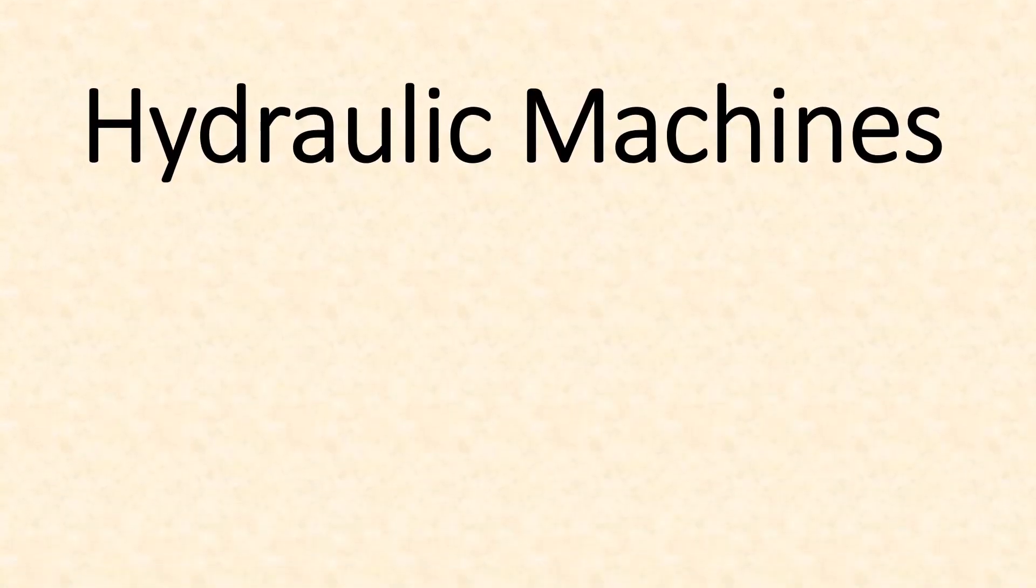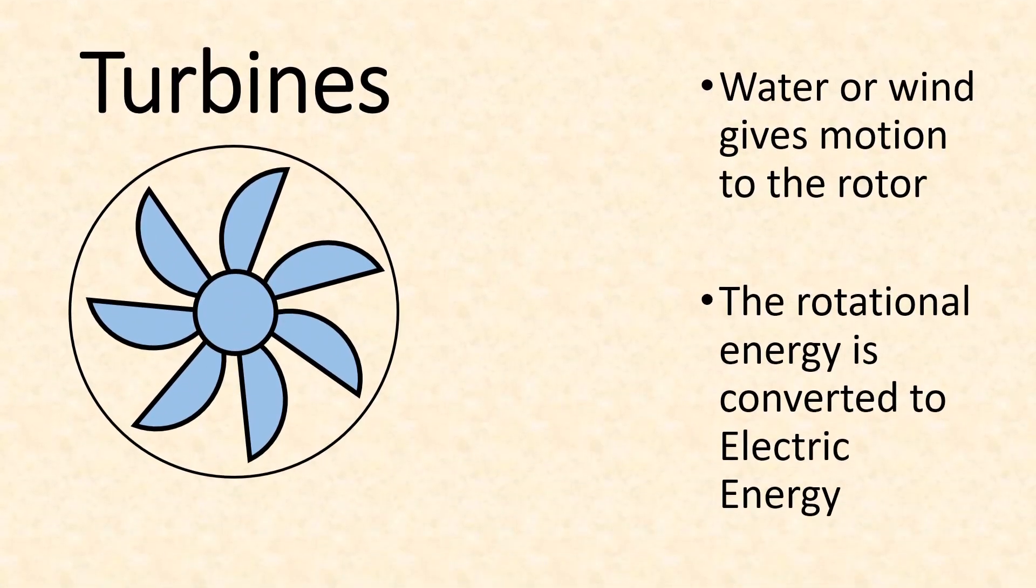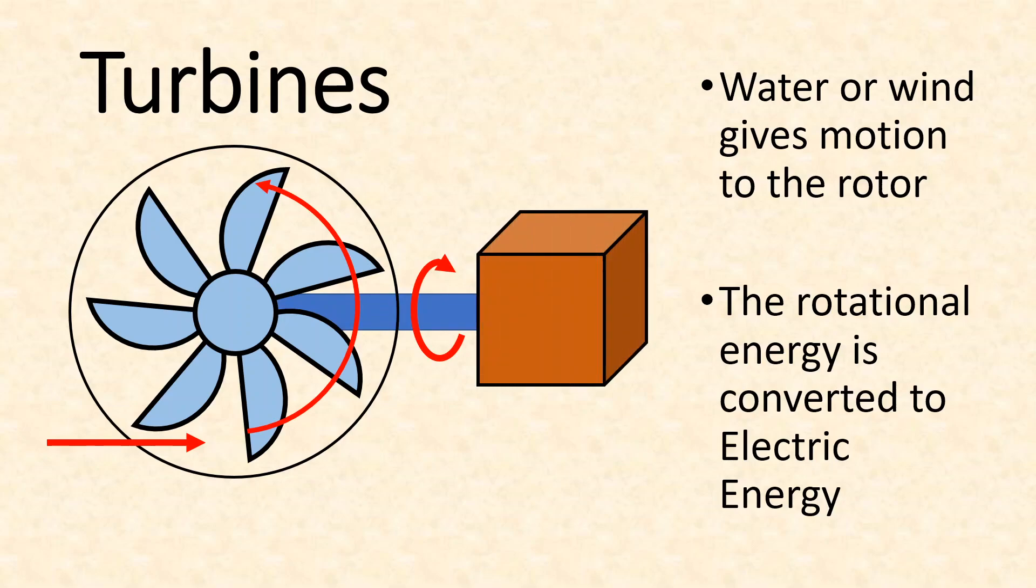That brings us to our next topic which is hydraulic machines. We'll mostly study about turbines and pumps in the hydraulic machines chapter. Turbines are basically machines where we use a motion of wind or water or sometimes some other gas or vapor so that it can be converted to some other kind of energy, generally electrical energy.